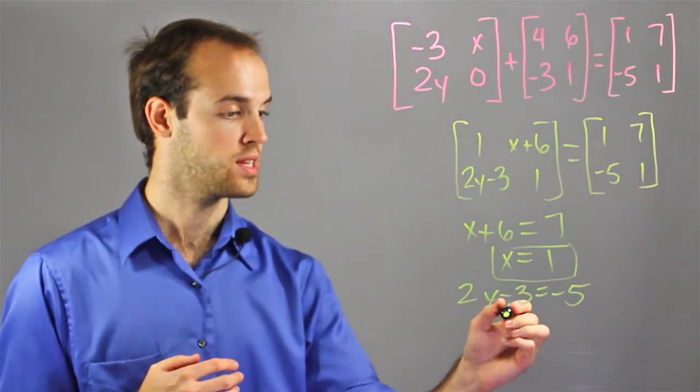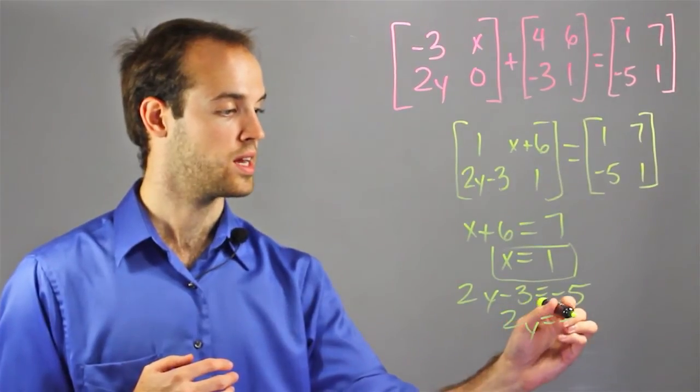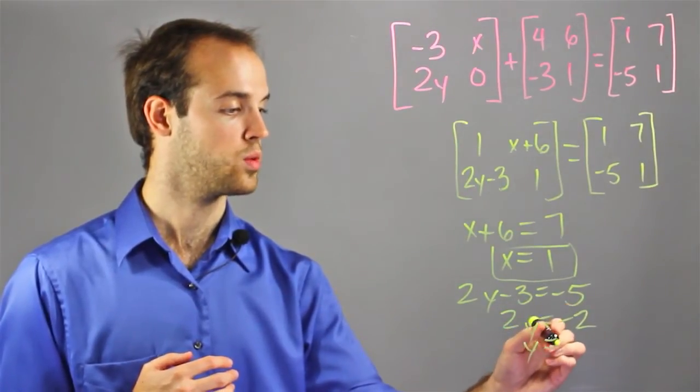I'm going to add 3 to both sides, 2y equals negative 2, and y equals negative 1.